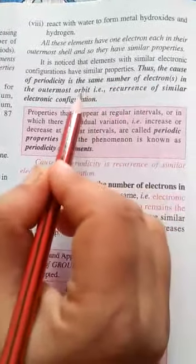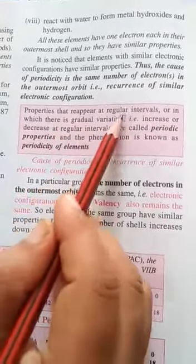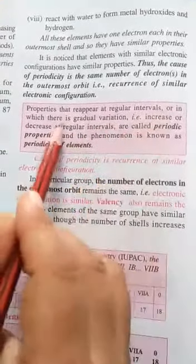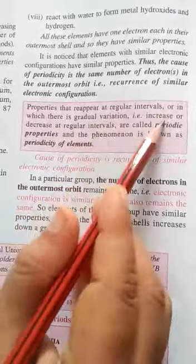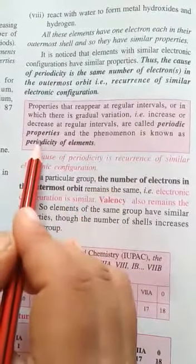They are showing that they all have similar properties, they are all metals. Properties that reappear at regular intervals, or in which there is gradual variation, that is increasing or decreasing at regular intervals, are called periodic properties.